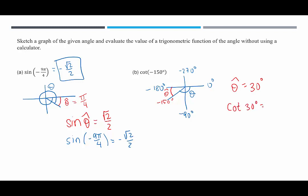Well, that would be the square root of 3, which means cotangent of negative 150 degrees is also the square root of 3. It's positive because it terminated in quadrant 3.